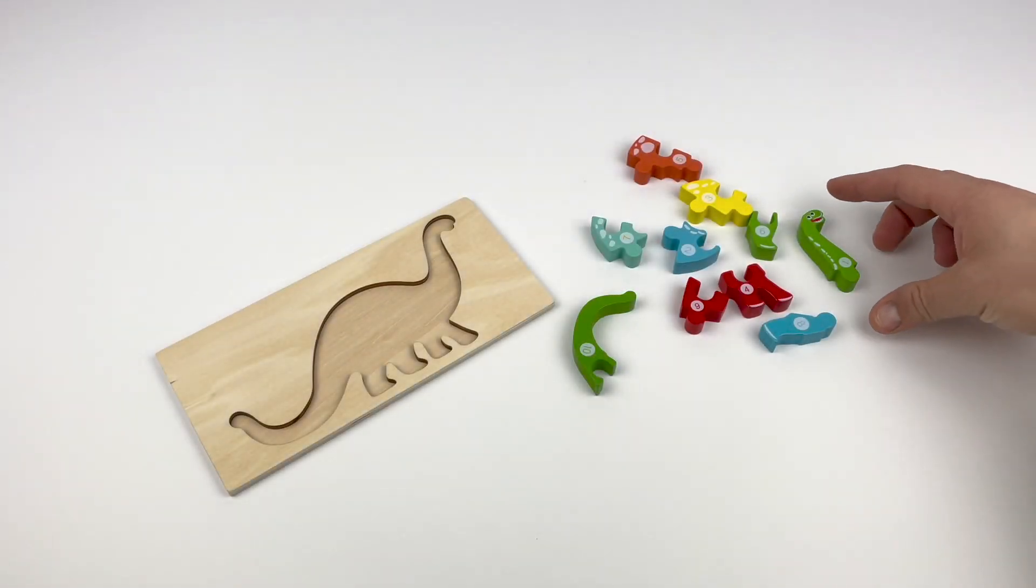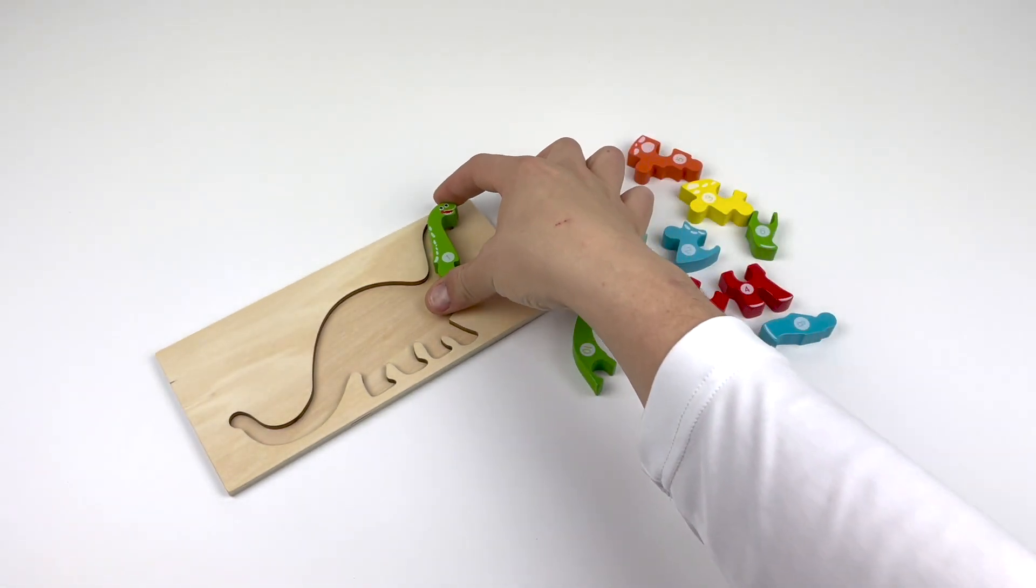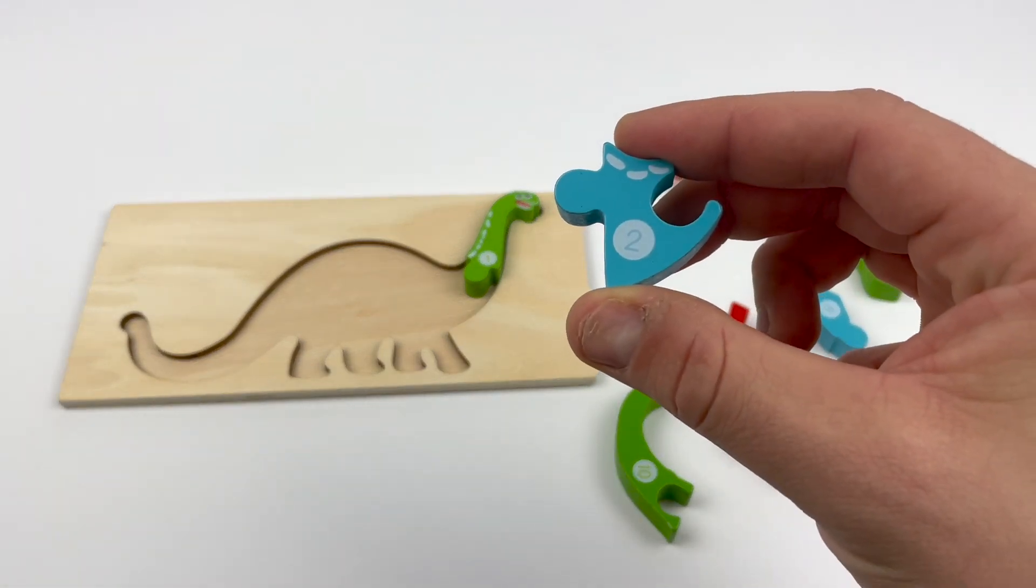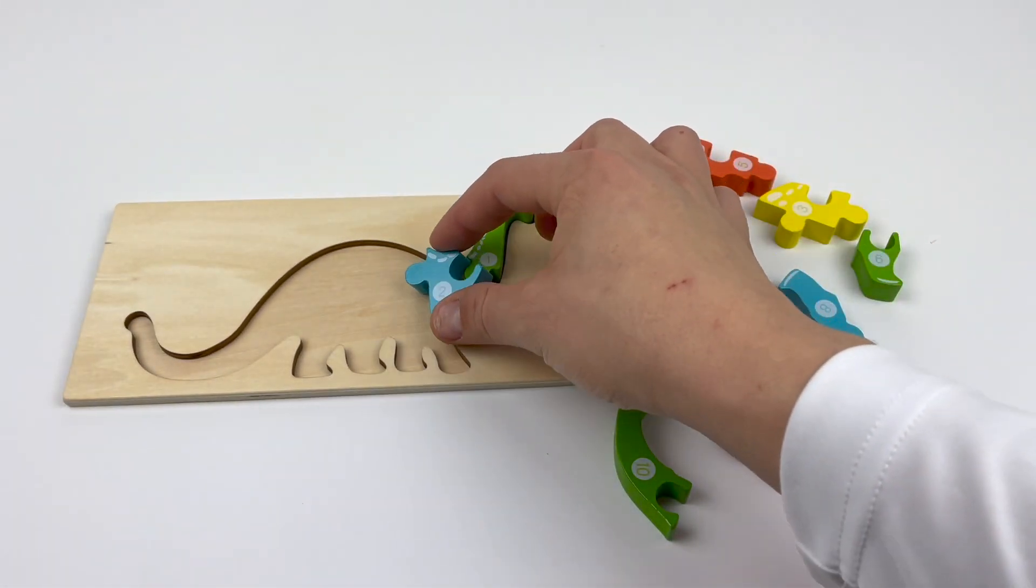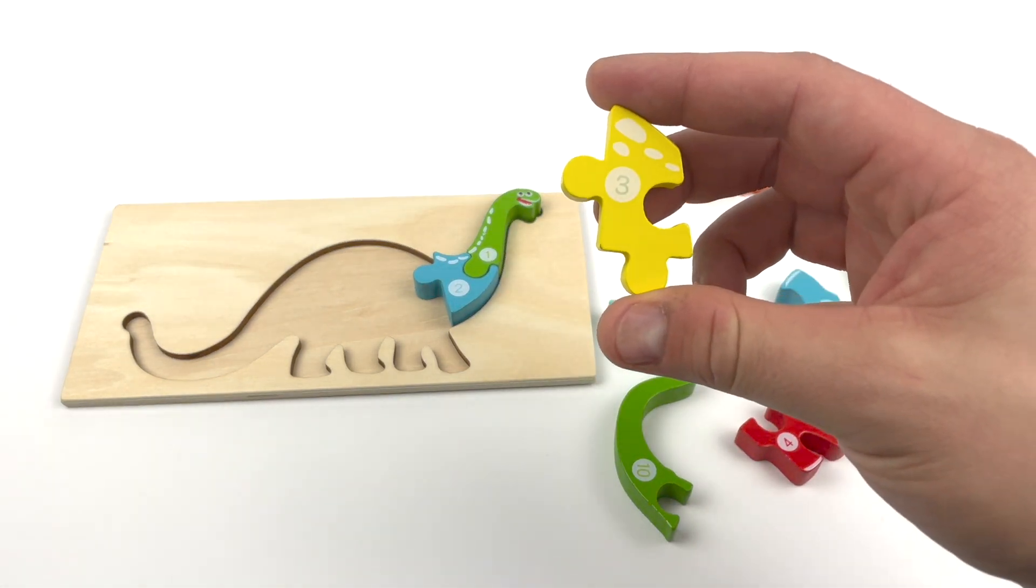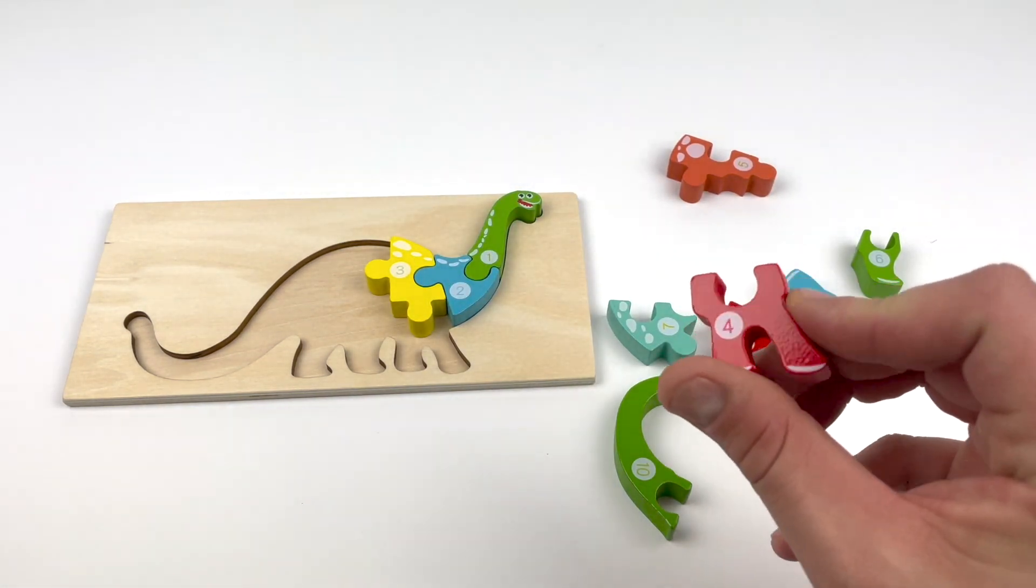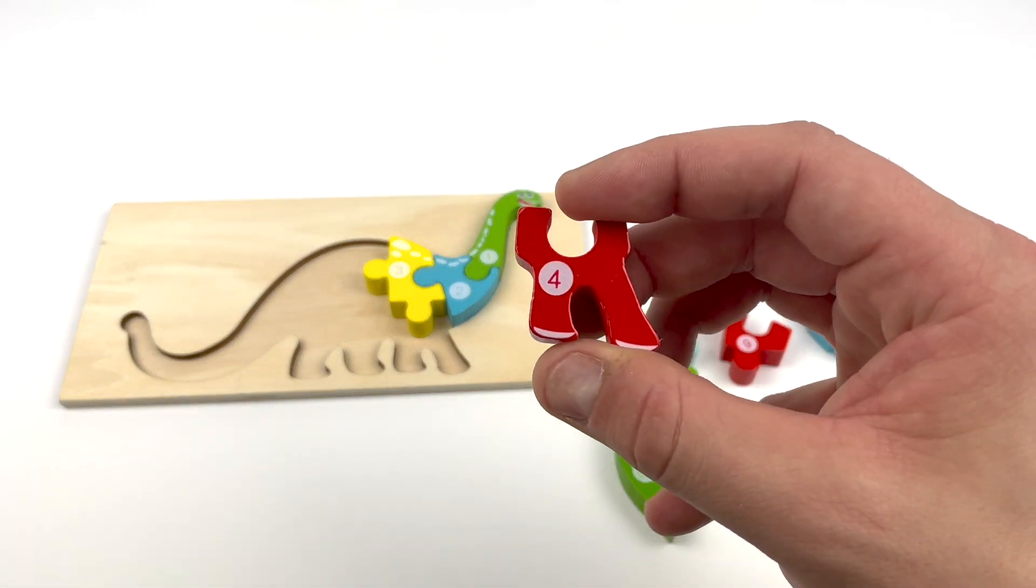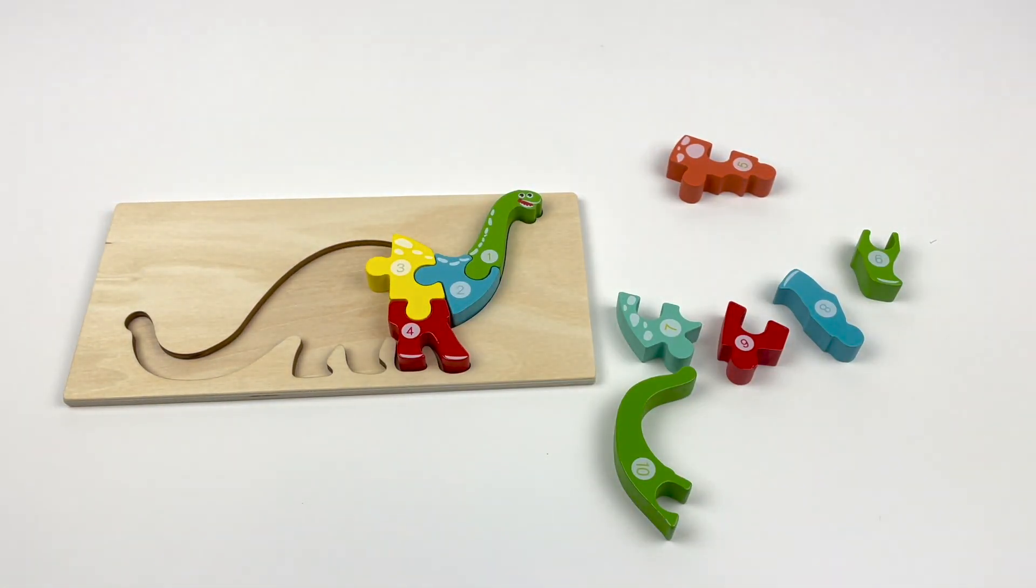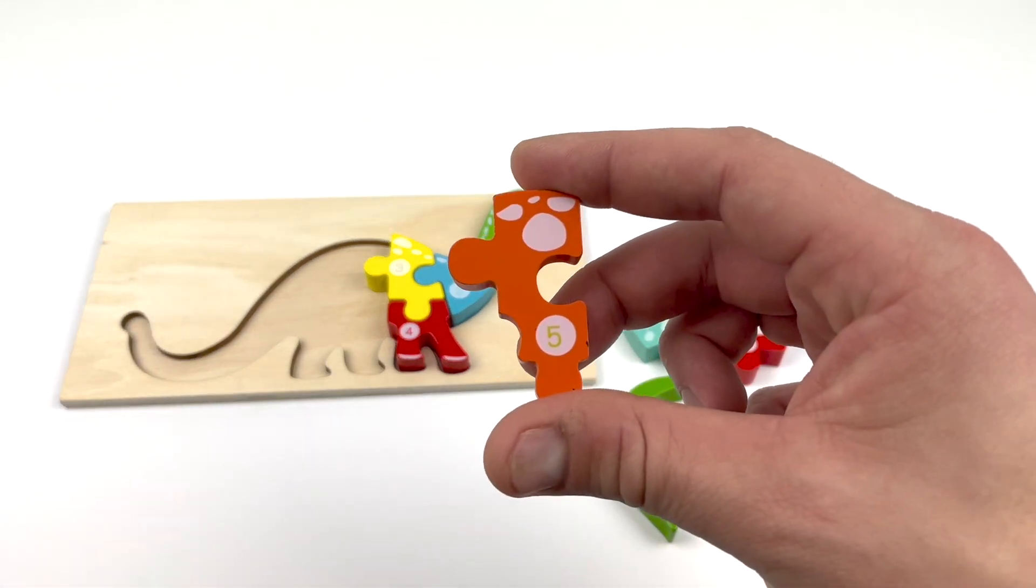Which number goes first? That's right. Number one, a green piece. Number two, blue. Number three, yellow. Number four, red. Right there. Number five, orange.